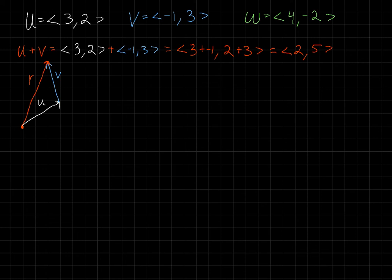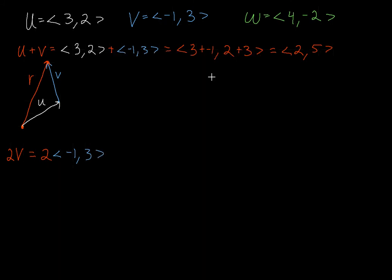Let's skip subtraction for just a moment and look at scalar multiplication. Scalar multiplication sounds very familiar — you use it in matrices. So what happens when we scale a vector? Let's take the vector v and scale it by a factor of 2. Writing it out in component form: 2 times the components of v. I'm going to distribute that 2 — it scales both the x component and the y component — and we end up with the scaled vector.